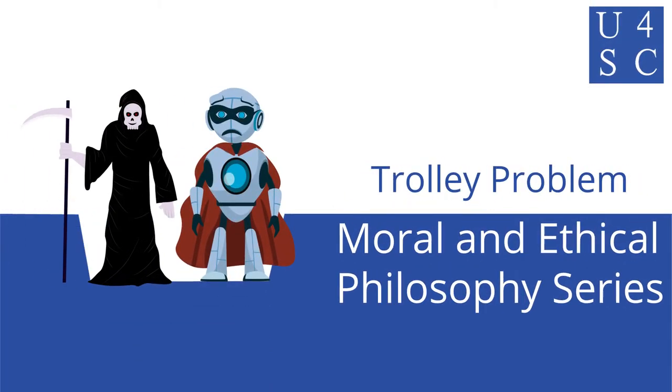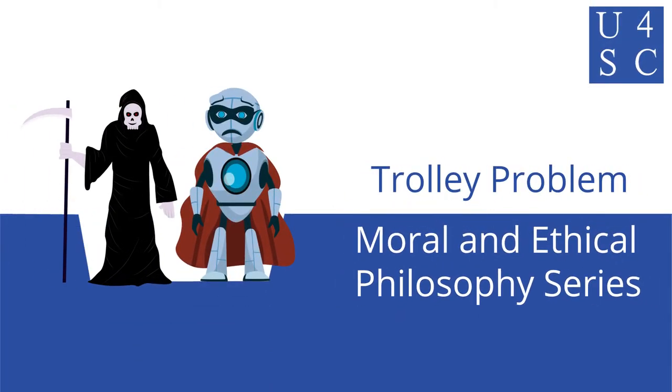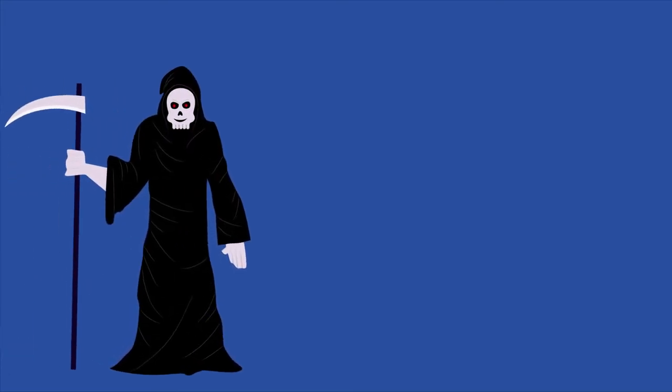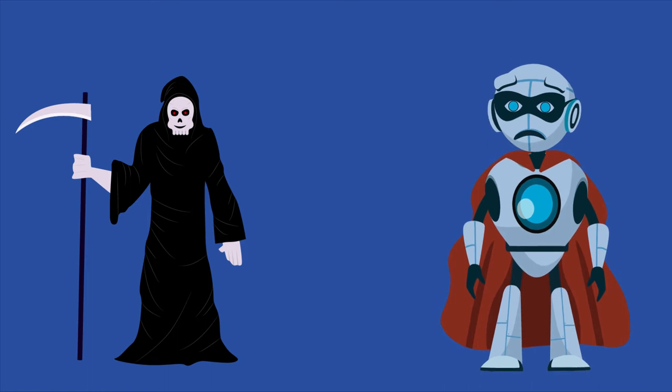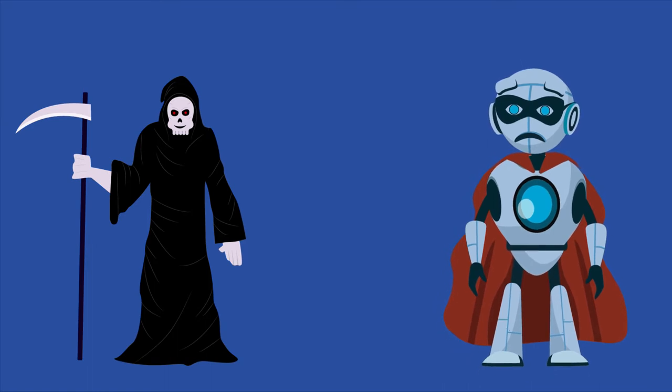Academy for Social Change presents The Trolley Problem. The Reaper is terrorizing Starbright City. He's captured local superhero Foresight and trapped them. At the villain's mercy, Foresight is given a sadistic choice.